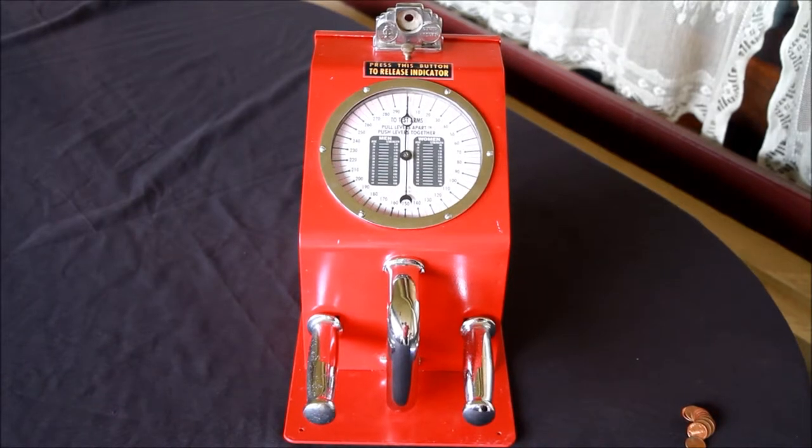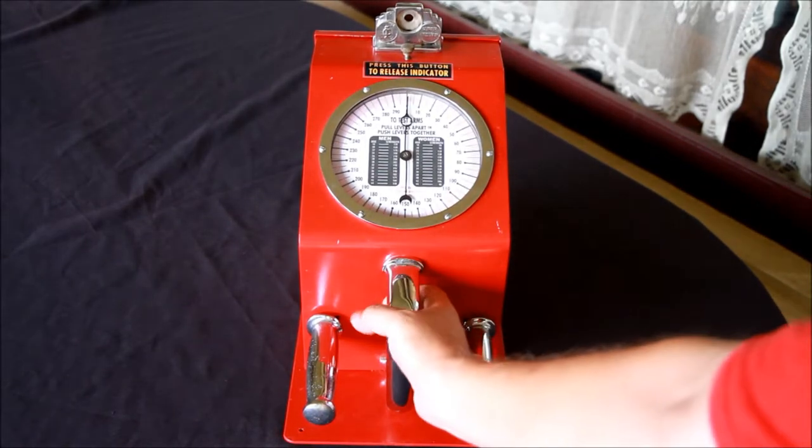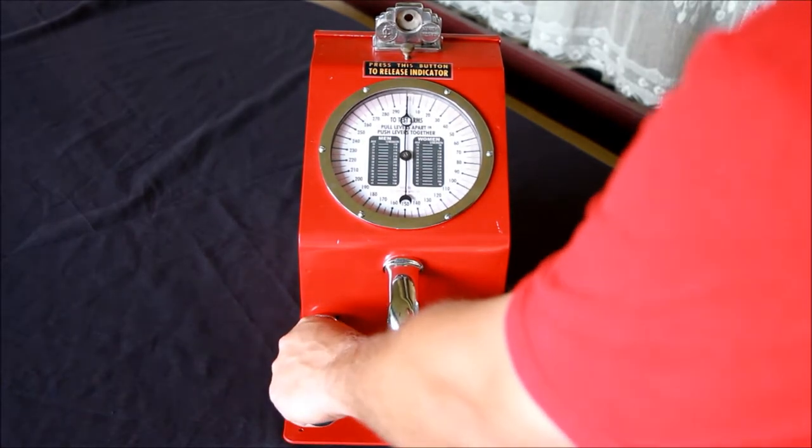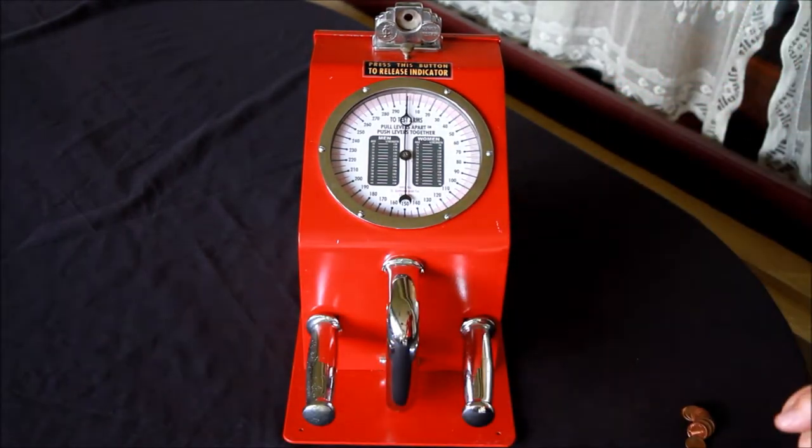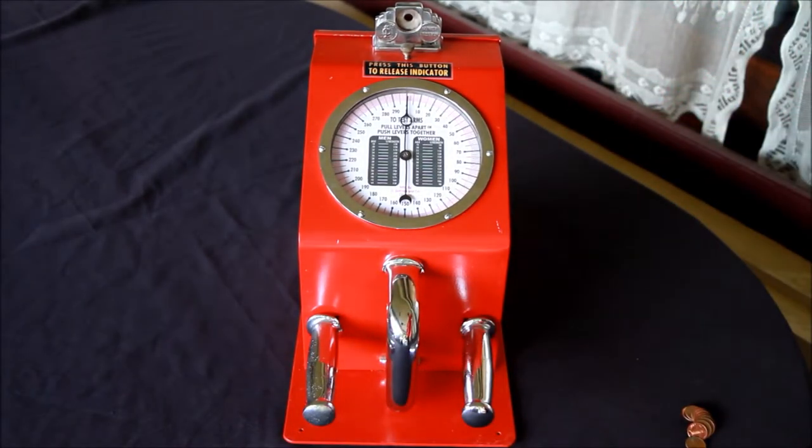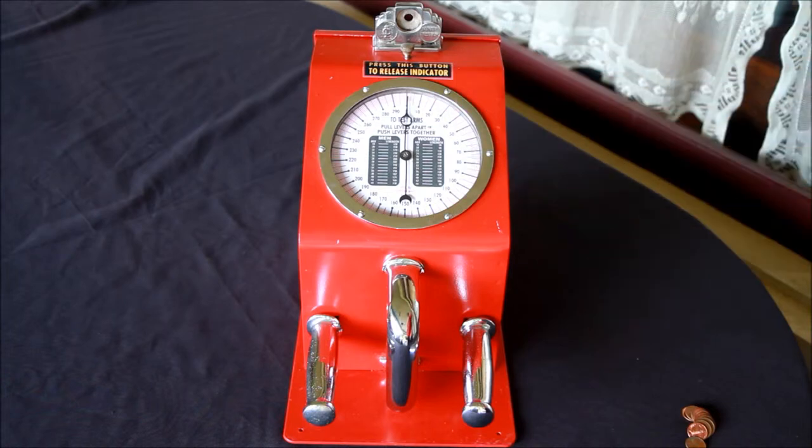The first way is to grip the center grip here and squeeze. The second way would be to grab these two side arms and pull them out. Or the third way would be to grab the side arms and push together to try and register it.